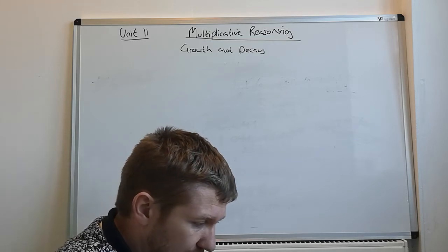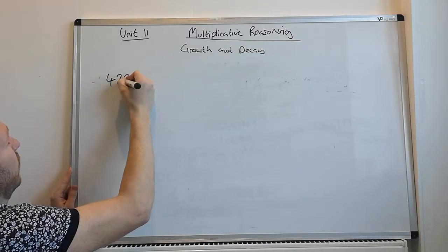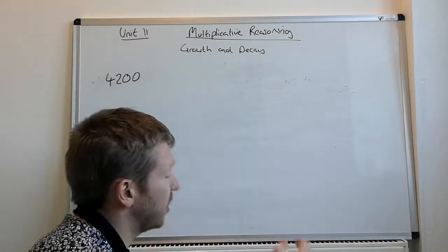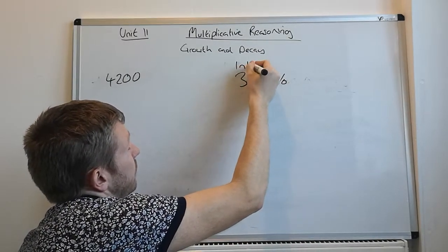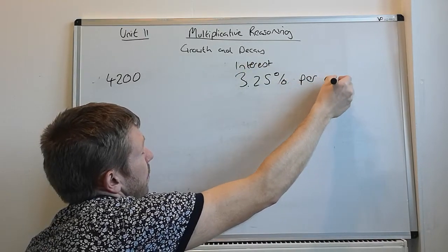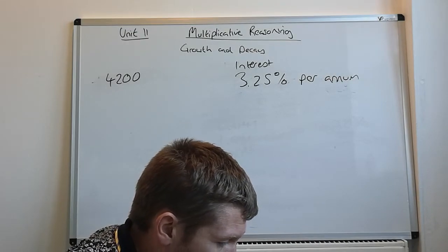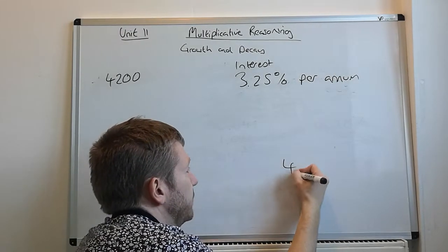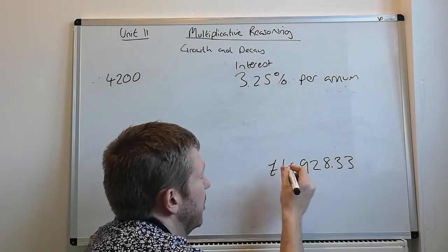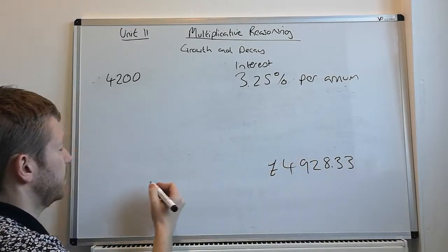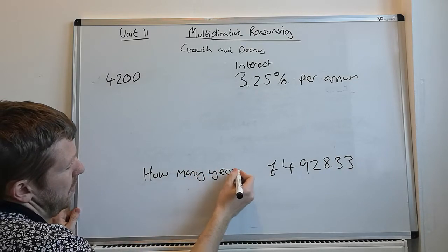Fidel. Fidel. Good name. Invested 4,200 in a savings account. 4,200 in a savings account. He's paid 3.25% interest per annum. How many years before he had 4,928 pounds and 33. Okay. So, this time we're looking for how many years.